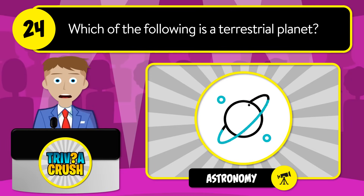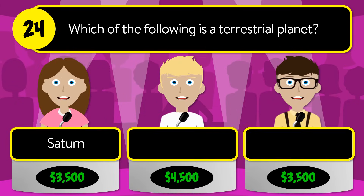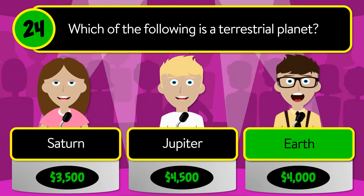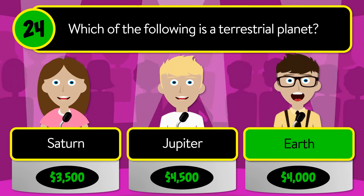Question number twenty-four: which of the following is a terrestrial planet? Is it Saturn, Jupiter, or Earth? The correct answer is Earth.